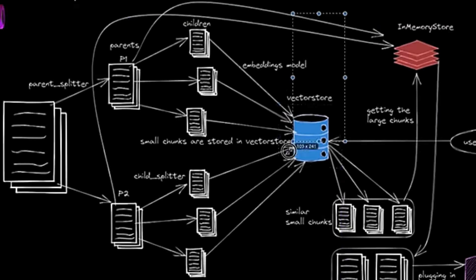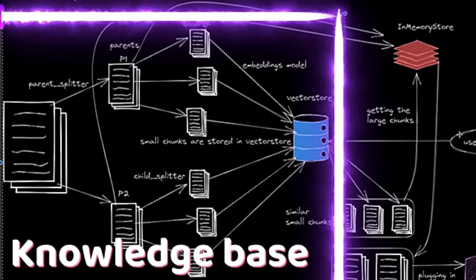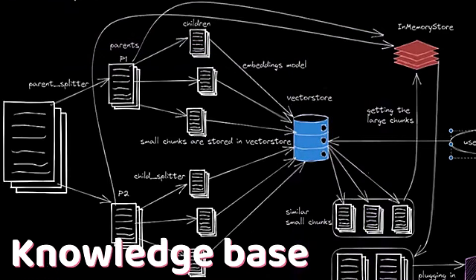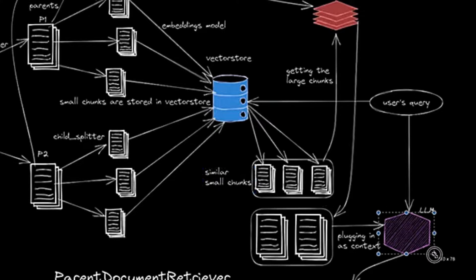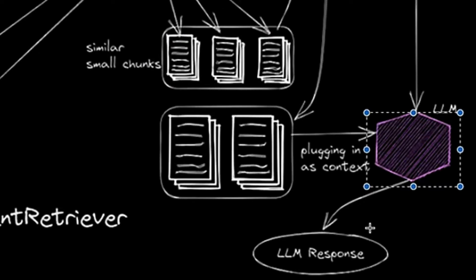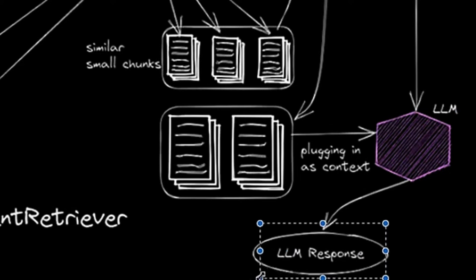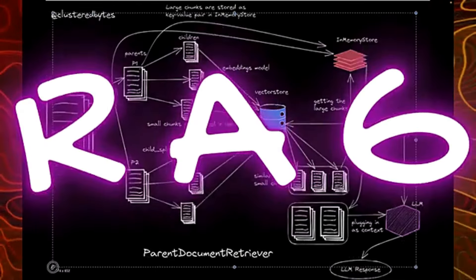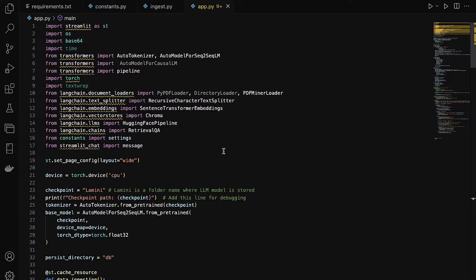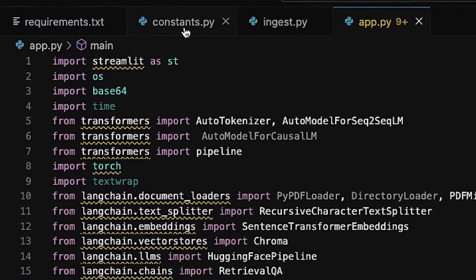This part is called the knowledge base creation. When a new user query comes in, you compute the embedding for that query, then perform retrieval on the vector store to find which documents are the closest matches. We find and retrieve those documents, append them to the initial user query, and pass them to the LLM language model. The LLM receives the query plus the relevant documents or chunks and generates a response. This part is called generation, and the entire setup is called retrieval augmented generation.